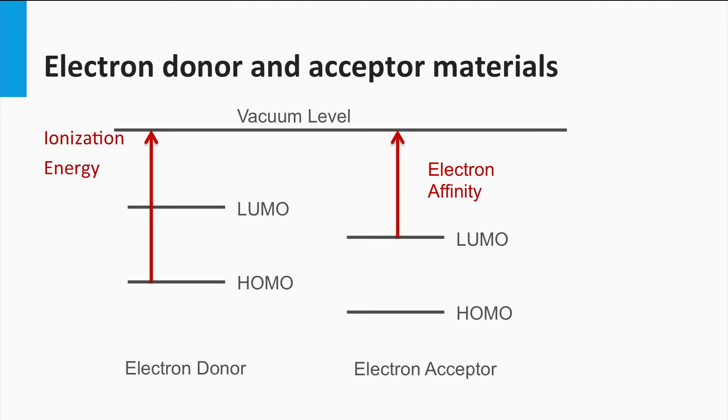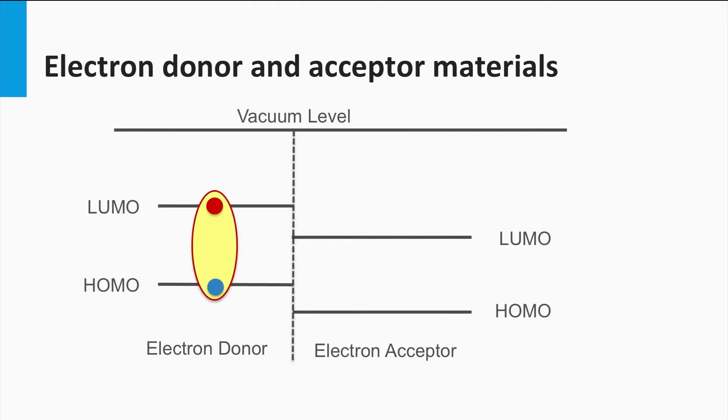It means when a molecular material has a low ionization potential, it can with relative ease release an electron out of the material. It can act as an electron donor. When a molecular material has a high electron affinity, it can easily accept an additional electron in the LUMO or conduction band.